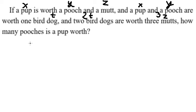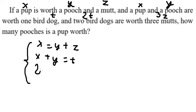Now we just create the system of equations in here. So on the question, how many pooches is a pup worth? That means x equals to Ay. We need to find about A in here, so we have equation number one, number two...